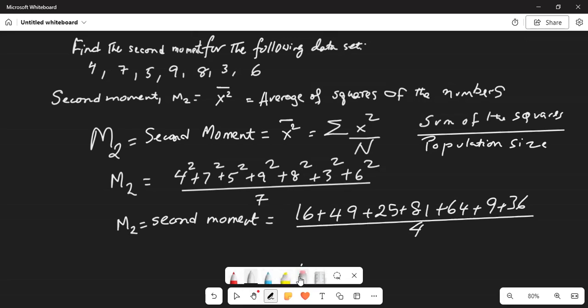Where did I get 4 from? Over 7, because there are 7 numbers. Okay? And that is equal to 280 divided by 7 which is equal to 40.